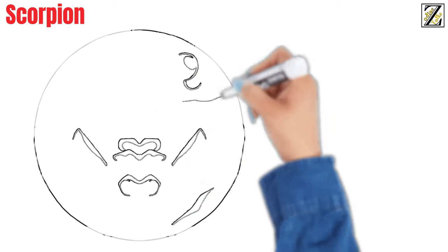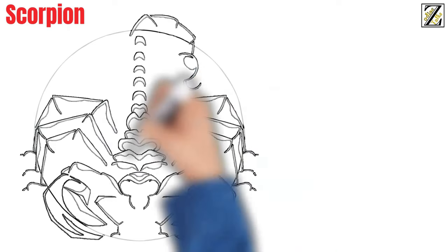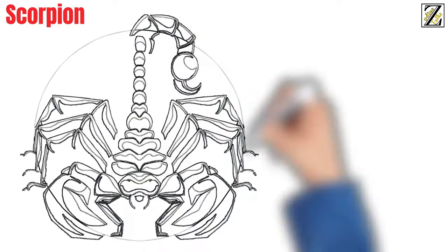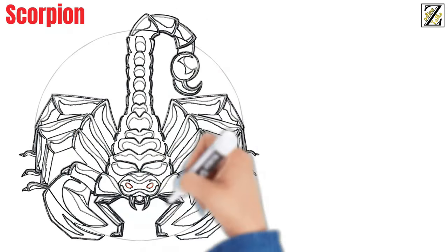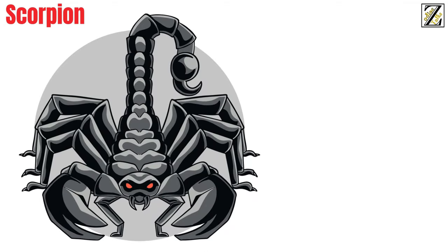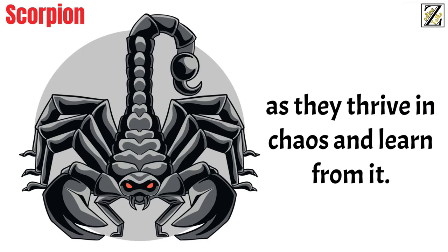Scorpion. This is their first stage. In this form, Scorpios are in fight-or-flight mode. They feel that their survival is threatened by everyone and everything. They need the struggle in this form, as they thrive in chaos and learn from it.